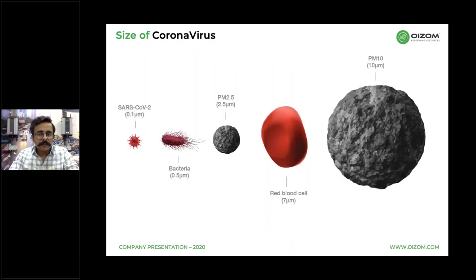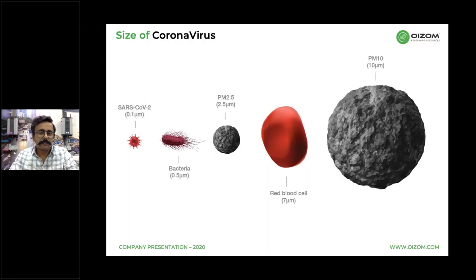The size of the coronavirus is 0.1 microns, which is way less than the detection thresholds of particulate matters like PM1, PM2.5, or PM10. This indicates the virus can easily penetrate through masks used to contain PM2.5 in the air. Now, imagine if the coronavirus were airborne — what kind of catastrophic damage it would create. Before coming to a judgment, let us discuss a few more findings about the virus.